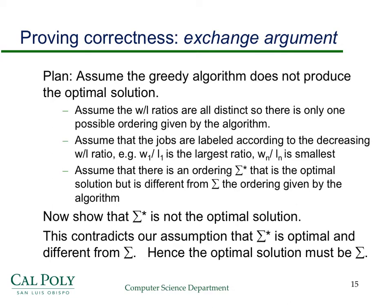I want to give you the big picture of how the proof is going to proceed. We're going to make some assumptions — none of these assumptions really affect the applicability of the proof; they can all be relaxed, it just makes the proof more complicated without them. To keep the proof clean, we'll assume that the weight-to-length ratios are all distinct, so there's only one possible ordering given by the algorithm. We also assume that the jobs are labeled according to decreasing weight-to-length ratio, so job 1 has the biggest ratio and job n has the smallest.